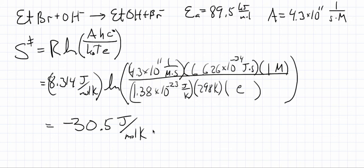This negative activation entropy implies that the transition state has less entropy than the separated reactants. We must be careful since this reaction is in solution — the entire system of solvent plus reactants has more entropy than the system of solvent plus transition state. So not only did we have to pay an enthalpic cost to make a transition state, we also had to pay an entropic cost.